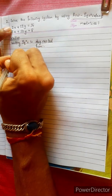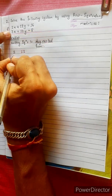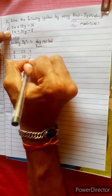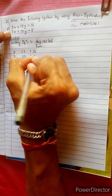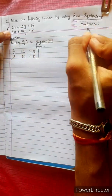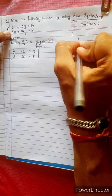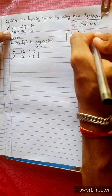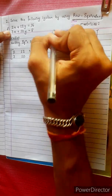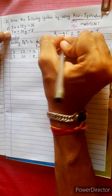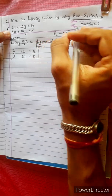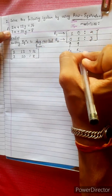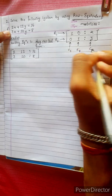Coefficient 2, 3, 16.8. Setting up the augmented matrix with entries: 1, 1, 1, 0, 1, 2, 3, 2.